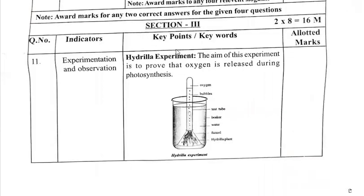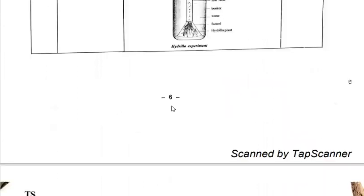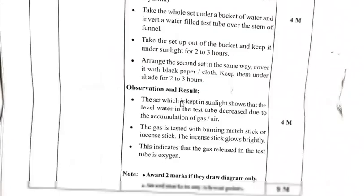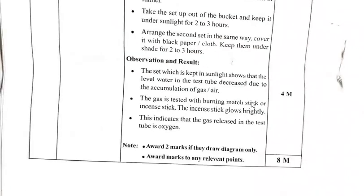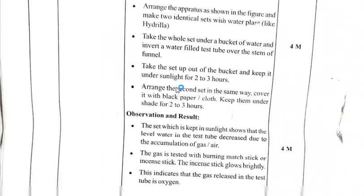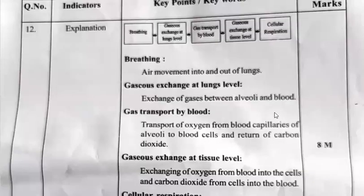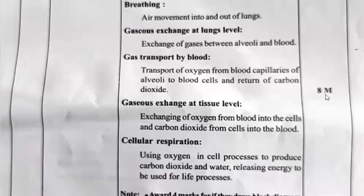For the Hydrilla experiment diagram: for observation and result, four marks; for procedure and diagram, you get four marks. Award two marks if they draw the diagram only. Award marks for any relevant points — for the diagram they get two marks, and for any relevant points again you get one mark. For a complete answer, the total is eight marks.